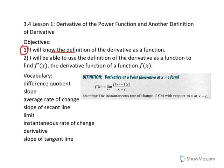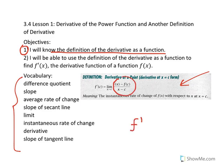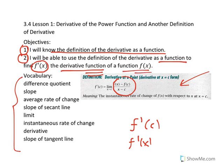Objective one: you'll know the definition of the derivative as a function. It is definitely the same concept we learned before, but you'll see how we write the difference quotient to get f prime of x instead of f prime of c. Objective two: you'll be able to use the definition of the derivative as a function to find f prime of x, the derivative function of some function f of x.